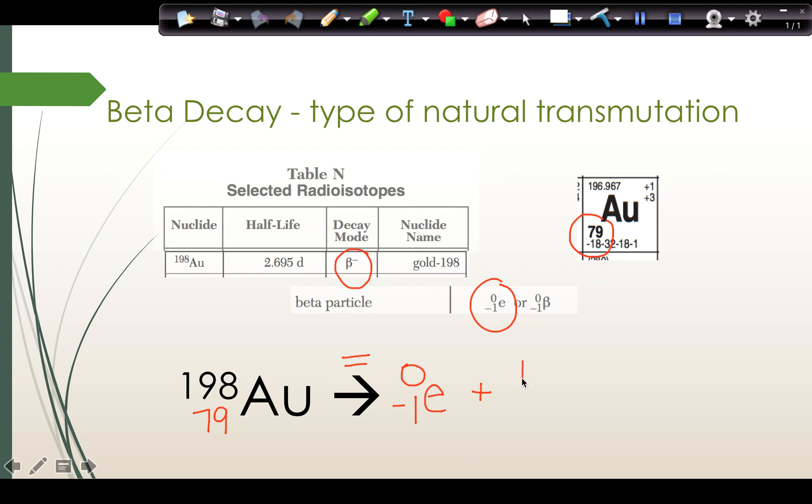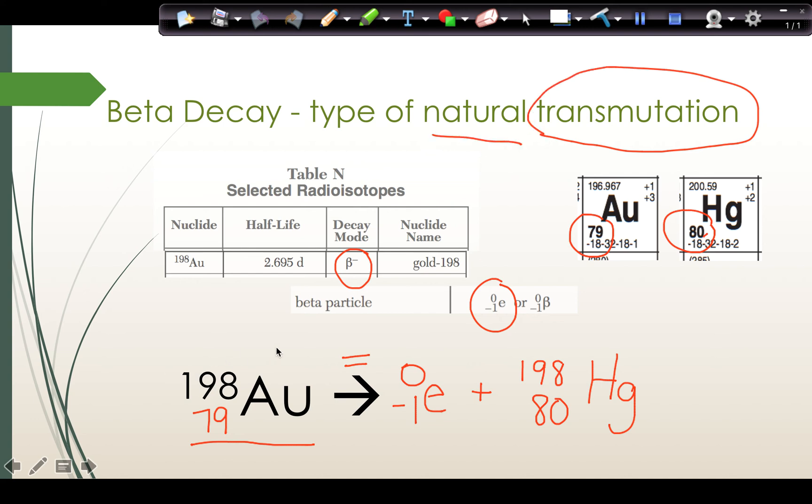198 equals 0 plus 198. 79 equals negative 1 plus 80. So the atomic number for the species that gold 198 turns into by getting rid of a beta particle has a mass number of 198 and an atomic number of 80. I look up atomic number 80 on the periodic table and fill in the symbol for mercury. This means that gold 198 spontaneously emits a beta particle and turns into a nucleus of mercury 198. Transmutation because we switched what element we have and natural because it happens alone.